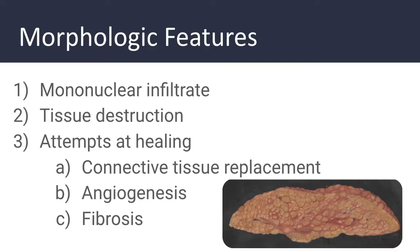The features of chronic inflammation include, firstly, a mononuclear infiltrate. Histologically, there are predominantly macrophages as well as lymphocytes and plasma cells in the tissue. There's also tissue destruction, either from the inflammatory stimulus itself or from the inflammatory cells. There will also be concurrent attempts at healing by replacing damaged cells with connective tissue, most commonly blood vessels and fibrous tissue. A good example of this side-by-side destruction and healing is seen in liver cirrhosis, where normal or regenerating liver tissue is surrounded by bands of scar tissue.